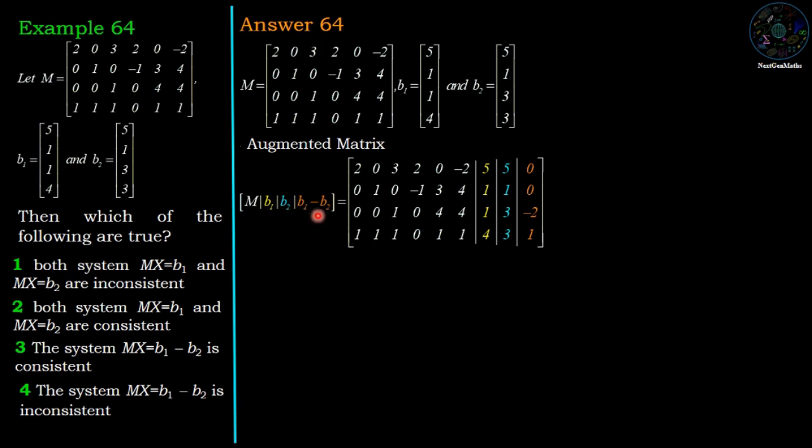Then to check the inconsistency or consistency, we require the rank of augmented matrix and the matrix M. So we convert this given matrix into reduced row echelon form or row echelon form.